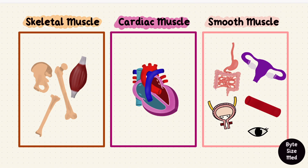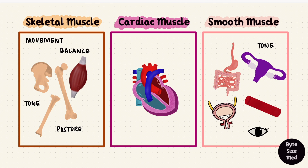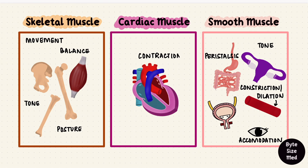Based on their location, their function becomes more obvious. The skeletal muscles are important for movement, balance, tone, posture, things like that. Smooth muscles — well, that would depend on their location. They're important for maintaining tone of visceral organs, for peristalsis, constriction and dilation of blood vessels, eye accommodation, etc. And cardiac muscle is needed for contraction and relaxation of the heart.